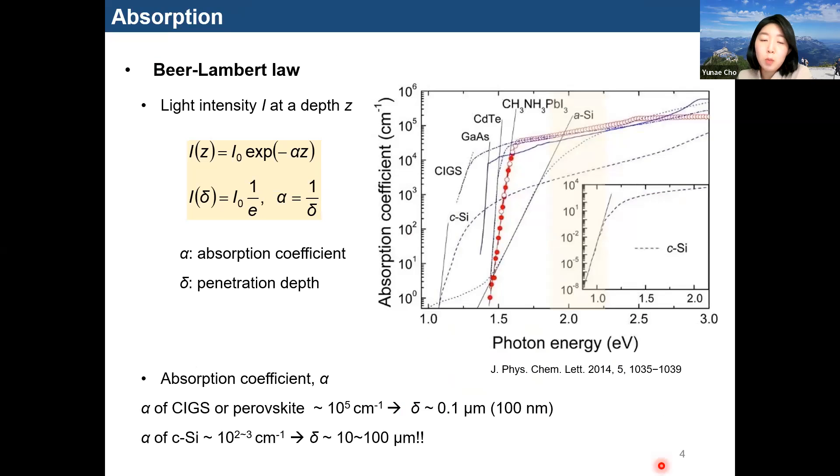To introduce more basic information about the absorption of light, you can see the Beer-Lambert law in this formula. When light is irradiated on the material, it is absorbed and penetrated by this formula. According to this law, the absorption coefficients according to the material and penetration depth is also defined as the inverse of the absorption coefficients.